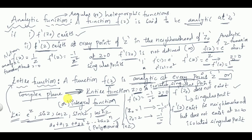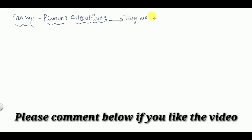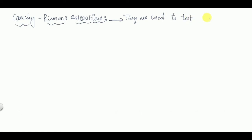Now I will explain how to find the analyticity if a complex function is given. If a complex function is given, how to find whether it is analytic practically by using Cauchy-Riemann equations. These Cauchy-Riemann equations are used to test the analyticity of a complex function f(z).